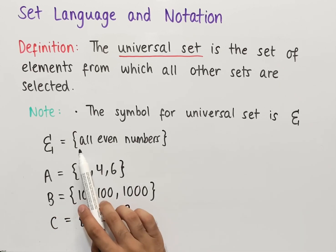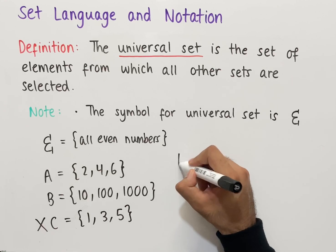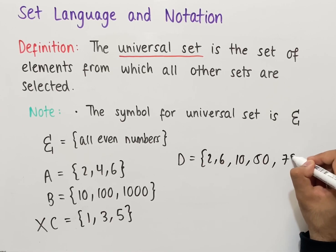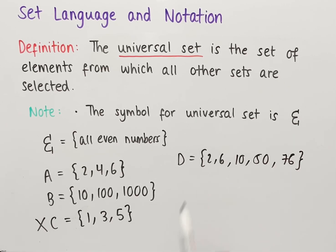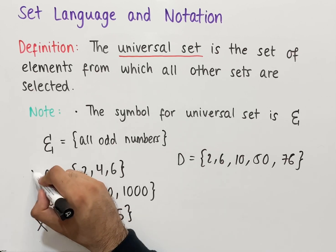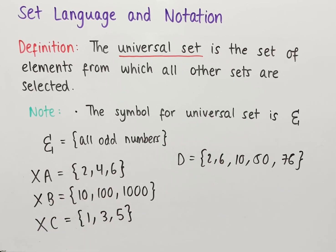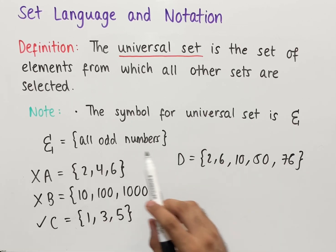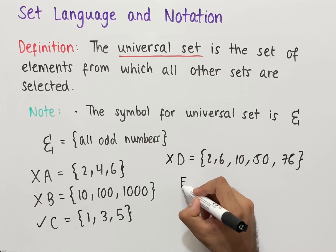Set C cannot be used within this context since our universal set is all even numbers. We could also have a set like two, six, ten, fifty, seventy-six, and so on — completely fine since every element is even. If we change the universal set to odd numbers instead, then set A is not valid since it contains even numbers, and set B is also not valid. Set C however would be completely fine since every element is odd.